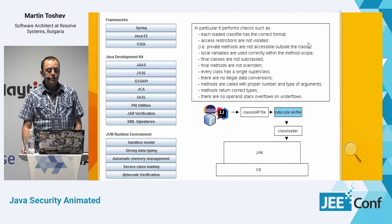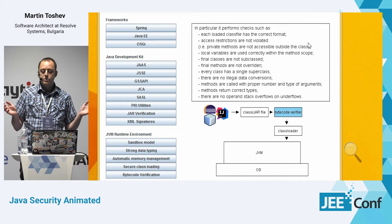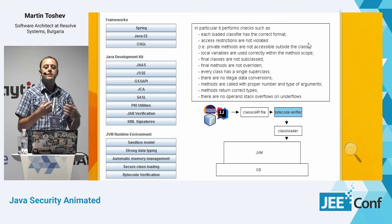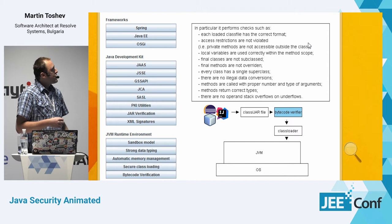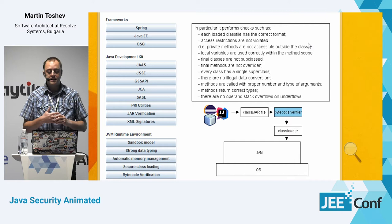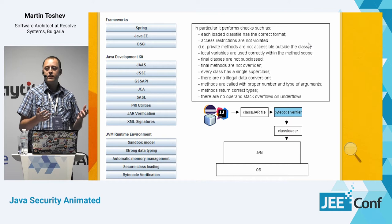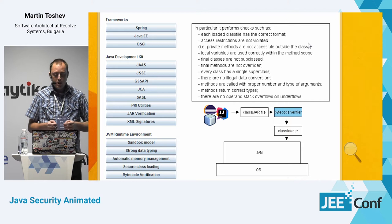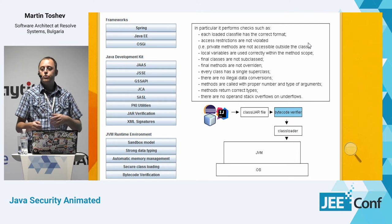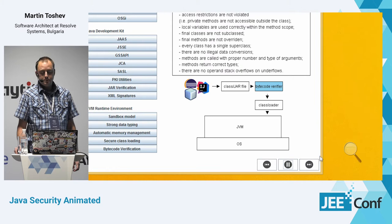Bytecode verification does a number of things: it checks that each loaded class file has the correct format and doesn't violate the Java language specification. It checks that access restrictions based on access modifiers — private, protected, etc. — are not violated. It also checks that you don't try to subclass final classes or override final methods, that every class has a single superclass, there are no illegal data conversions, no operand stack overflows or underflows, and you don't pass more or fewer parameters to a method than it expects.